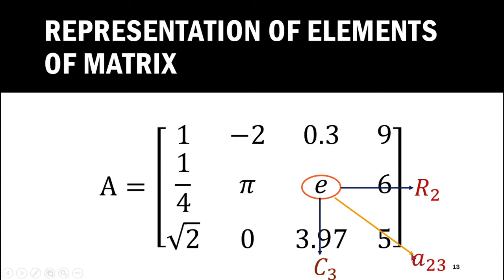The small letter 'a' is used for elements belonging to the matrix capital A. If the matrix is denoted by capital B, we use small letter 'b' to represent its elements. If the matrix is denoted by capital X, we use small letter 'x' to denote its elements. The first suffix represents the row number in which the element belongs, and the second suffix represents the column number in which the element belongs.